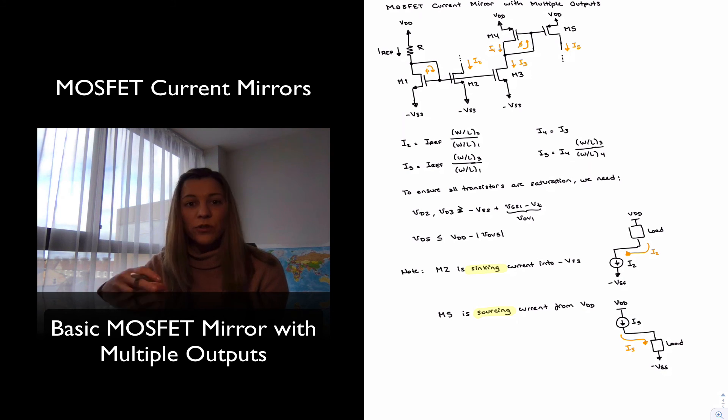But then also notice that as opposed to the BJT current mirror, where the more transistors, the more stages you added, you will be loading your reference current. In the case of the MOSFET, the loading effect is not as bad, simply because the currents going into the gates are equal to zero. And so it doesn't suffer from the loading, the susceptibility to loading effects that the BJT mirror had.